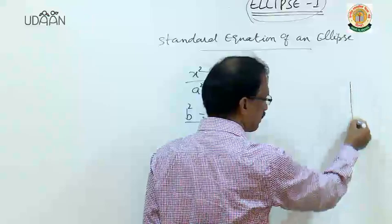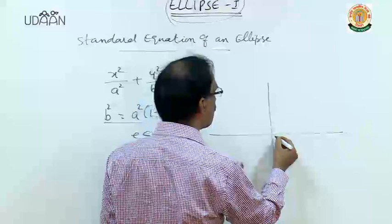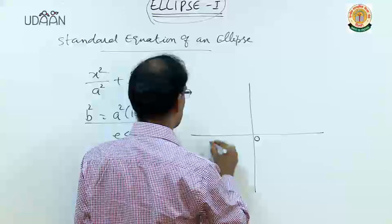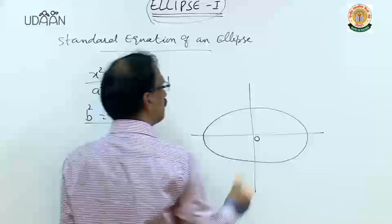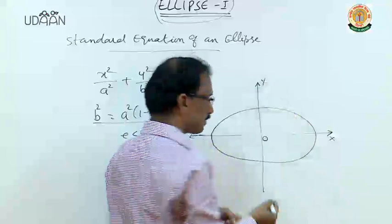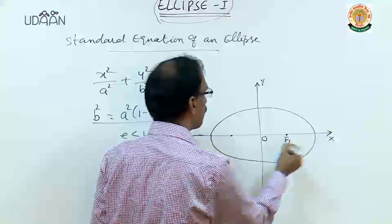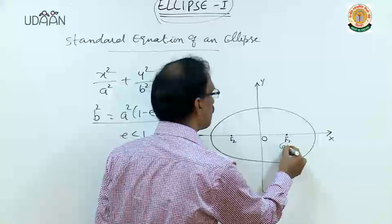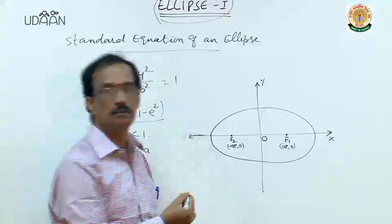This is the first case. Let us see the terminologies used. The center is the origin. This is your ellipse elevated along the x-axis and y-axis. These are the two fixed points F1 and F2. Let us take them as (ae, 0) and (-ae, 0).